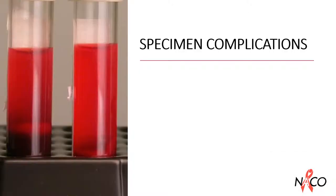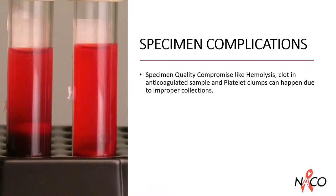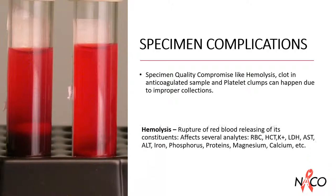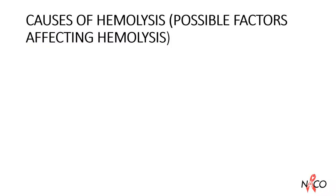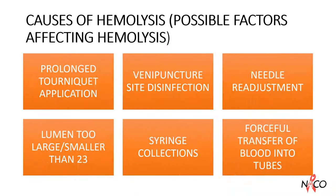Specimen-related complications — such as hemolysis, clots in anticoagulated samples, and platelet clumps — can happen due to improper collections. Hemolysis is the rupture of red blood cells (RBCs), releasing their constituents, and affects several analytes. Possible factors affecting hemolysis include fragile and easily traumatized veins, prolonged tourniquet application, venipuncture site cleansing procedure, needle readjustment while taking the sample, and needle gauge — if the lumen is too large or smaller than 23 gauge.